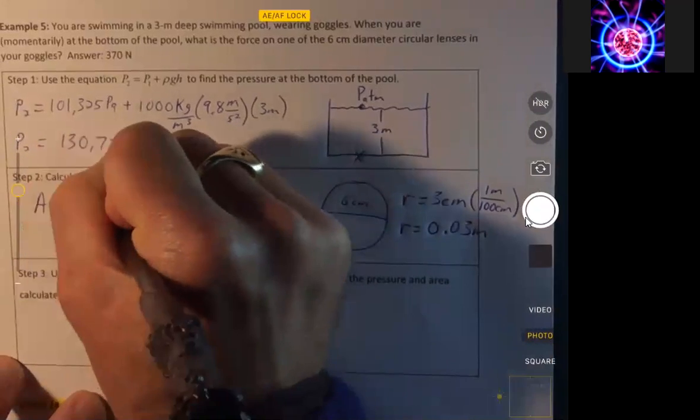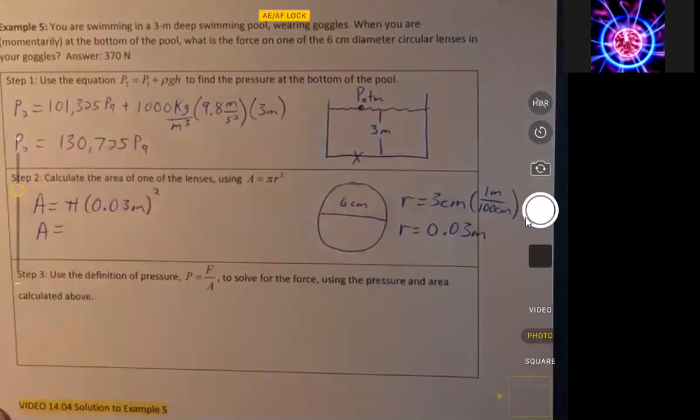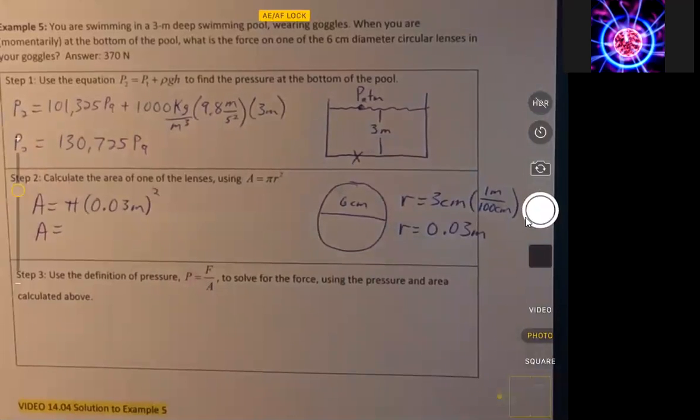π times 0.03 meters, and we square that. Both the unit and the number are squared, so π times 0.03 squared,